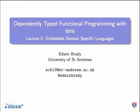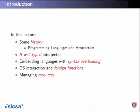It might seem strange to implement a programming language just to have another language to implement other languages in, but hopefully by the end of this lecture you'll see why that is a valuable thing to do. I'm going to start with a little bit of history of programming languages and abstraction, then go on to the well-typed interpreter — a hello world example of Dependently-Typed Programming. I'll also show how to use embedded domain specific languages to do resource correctness proofs.